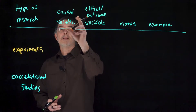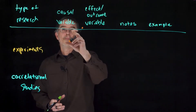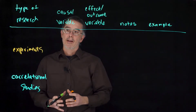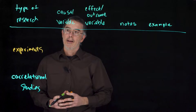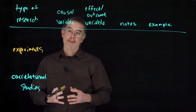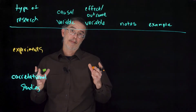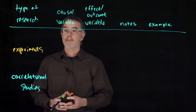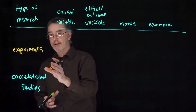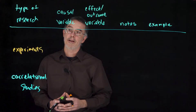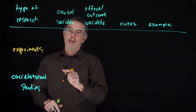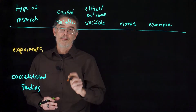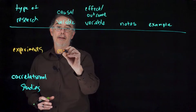In that case, the causal variable is caffeine. If a researcher wants to find out if caffeine decreases tiredness, they could do an experiment or they could do a correlational study. If they do an experiment, that causal variable is manipulated.